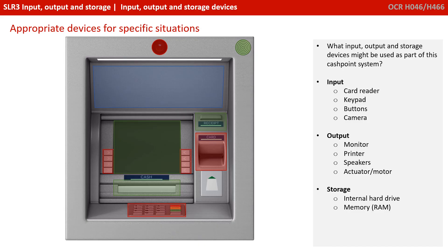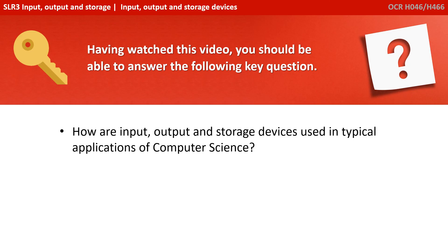You can also infer that there must be some storage devices behind this system — most likely some form of internal secondary storage and most likely some main memory. Having watched this video, you should be able to answer the following key question: how are input, output and storage devices used in typical applications of computer science?